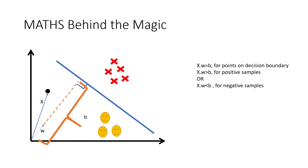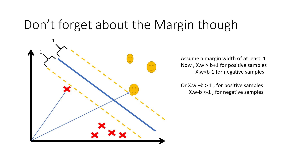Now we also need to incorporate the margin. In SVM, a point shouldn't only lie across the boundary — it should lie across the margin as well. We assume the margin width is at least 1 unit from the decision boundary; it can be more, but 1 is taken as a standard. So the equation becomes: x dot w > b + 1 for positive samples (above the boundary and at least one unit away), and x dot w < b − 1 for negative samples.